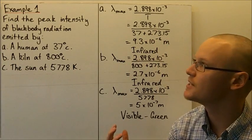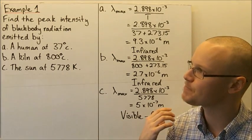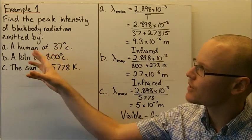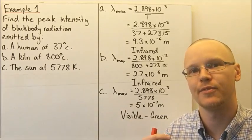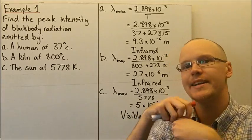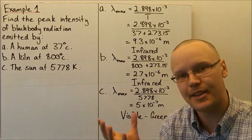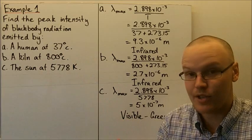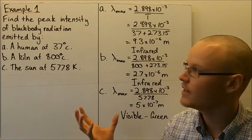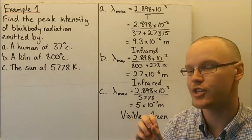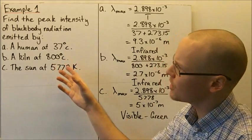Let's look at the radiation curves given off by a black body for some specific cases. If a human is treated as a black body — in reality humans aren't true black bodies because we reflect some radiation, which is why we can see each other — but if we say a human has a core temperature of 37 degrees Celsius, we can look at the peak radiation. We can also look at a kiln and the peak wavelength of radiation it emits, and also at our star, the sun.